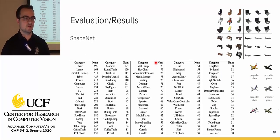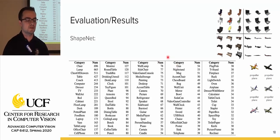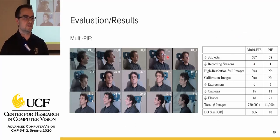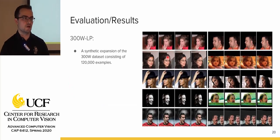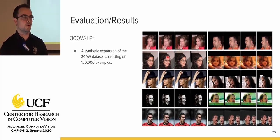For evaluation, they used three datasets. The first is ShapeNet, a 3D model-based dataset with categories including chairs, lamps, and tables. The second is the MultiPi dataset, an extension of the Pi dataset containing human faces at 15 different camera angles at head height. The third is the 300W-LP dataset, a synthetic expansion of the 300W dataset consisting of 120,000 images of human faces used for continuous face rotation.